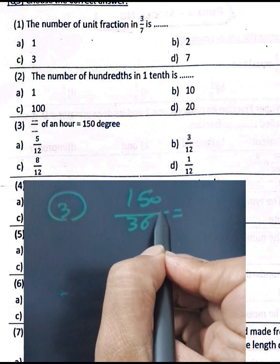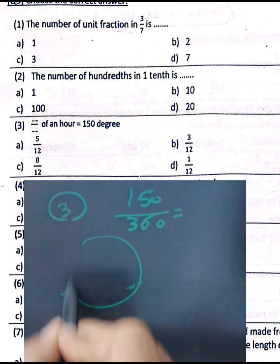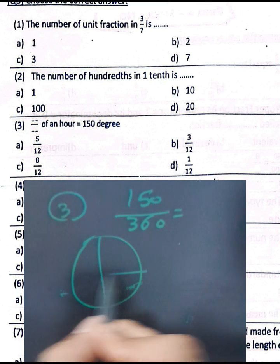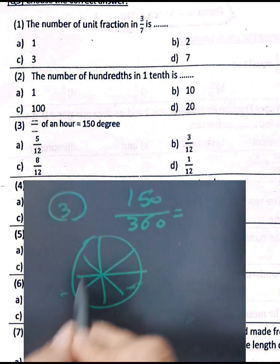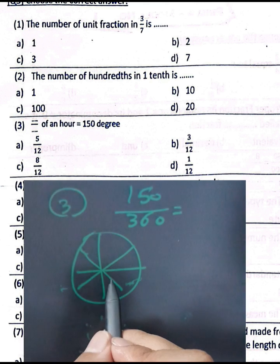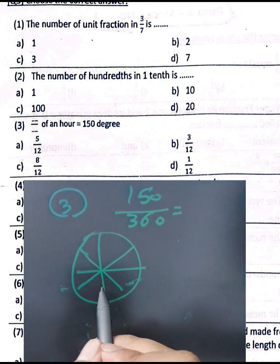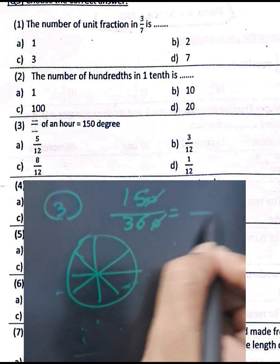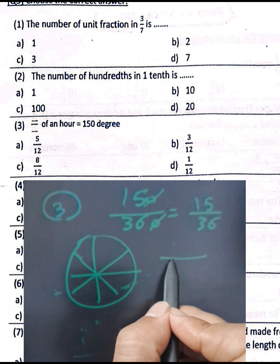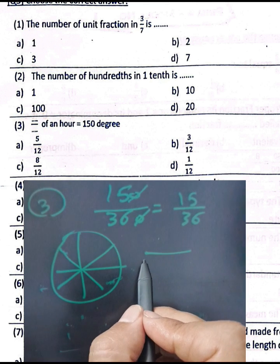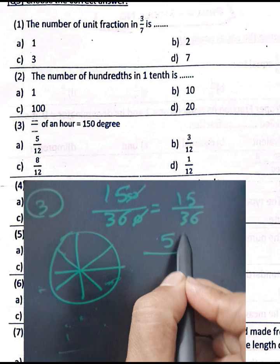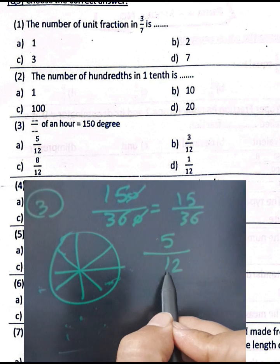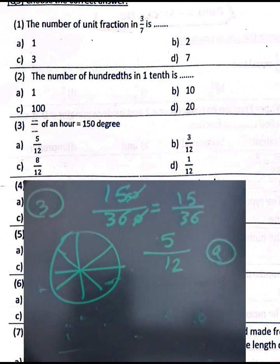Question number three: a space of an hour equals 150 degrees. You can simplify 150 over 360 by dividing by 10, giving 15 over 36, then divide by 3: 15 divided by 3 equals 5, and 36 divided by 3 equals 12, so the result is 5 over 12. Choose letter E. The word 'hour' here means a clock or circle.